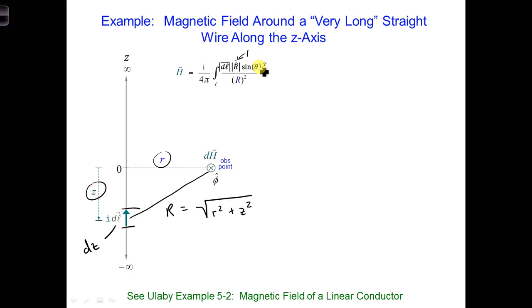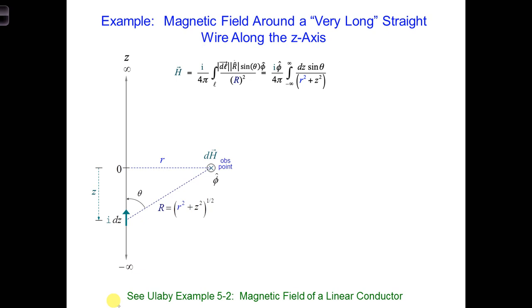Theta is the angle between the r vector and the direction that DL is pointing along the wire, so here is theta. This is all shown a little more clearly here.